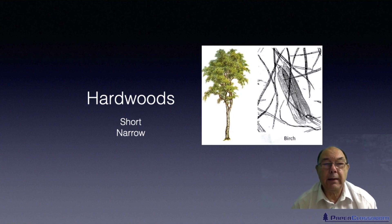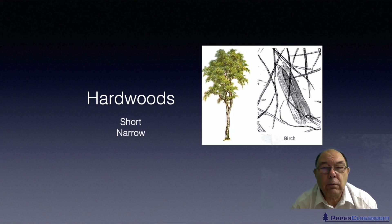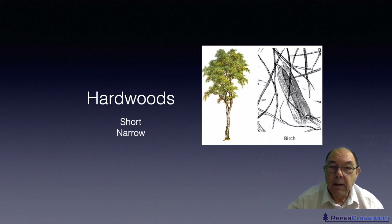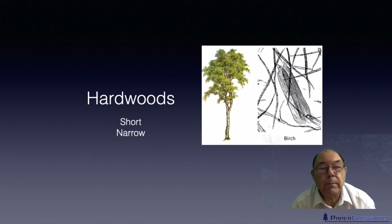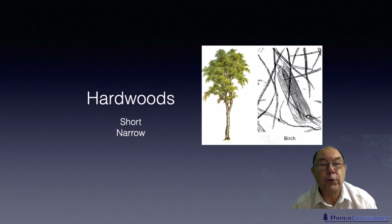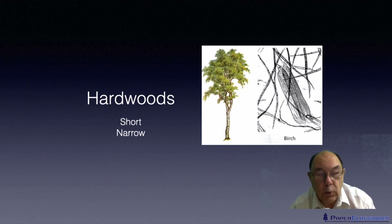Hardwood fibres are typically short and narrow, maybe up to 2 millimetres long and about 18 to 20 microns wide. Here in this slide we can see these hardwood fibres. This thing here is called a vessel cell or vessel element. You don't get those in softwood fibres, only in hardwood fibres. By looking at those vessel cells you can actually tell what tree it comes from — it's the best diagnostic tool for working out what sort of fibre you're dealing with.